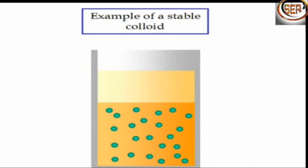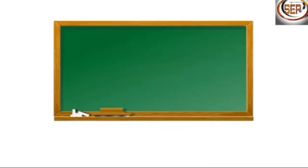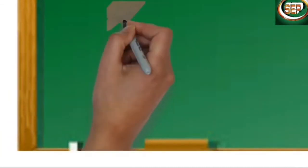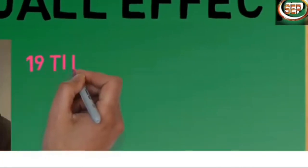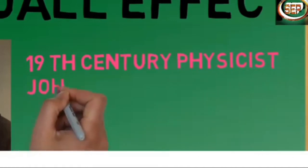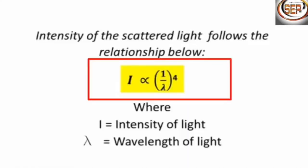In colloids, the particles never stay stable and they move freely from one position to another in random motion. When a ray of light strikes these particles, the light gets scattered. This scattering of light is known as the Tyndall effect, named after the 19th century physicist John Tyndall. We can understand this Tyndall effect with the help of a relation.